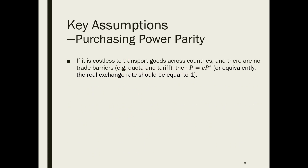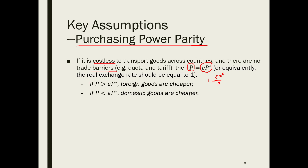Building on the small open economy without money, the only additional assumption in the small open economy with money is purchasing power parity. This assumption is actually an economic law one can derive based on the economic principle of equilibrium. Imagine if it is not costly to transport goods across countries and there are no trade barriers like quotas and tariffs, then the domestic price of the same goods, P, should equal the foreign counterpart, E multiplied by P*. In other words, the real exchange rate should equal 1. If P is greater than EP*, then foreign goods are cheaper, leading to excessive demand for foreign goods, which will push P* higher until the market clears.